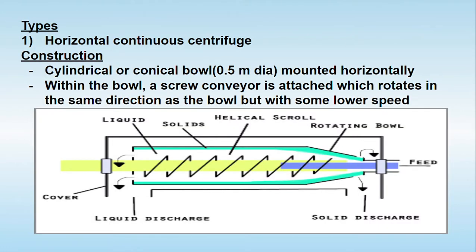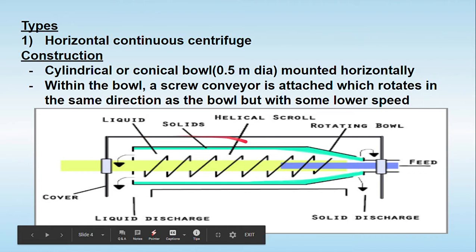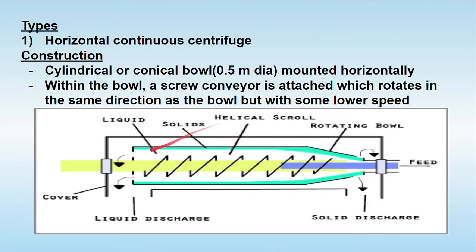There are two types of sedimentation centrifuge. The first is called the horizontal continuous centrifuge. As the name suggests, it operates continuously and rotates on its horizontal axis. It consists of a cylindrical or conical bowl mounted horizontally. Inside the bowl there is a helical screw conveyor, which is attached within the bowl.